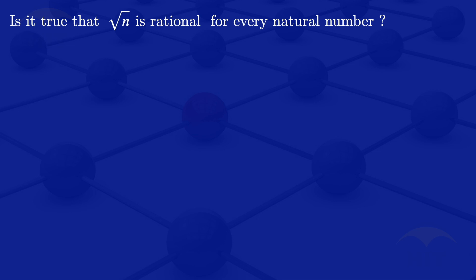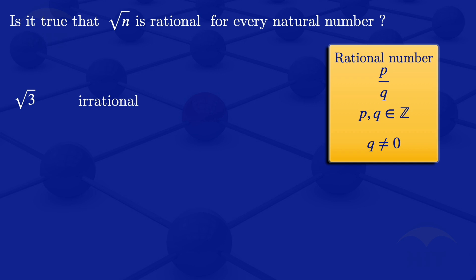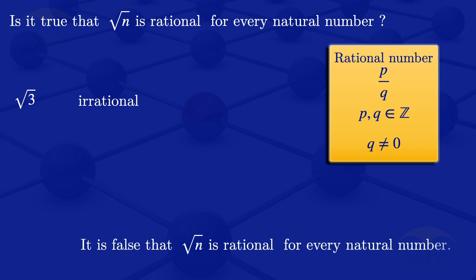To check, I will start by looking at the definition of rational numbers. A rational number is any number that can be written in the form p over q, where p and q are integers, and q is not equal to zero. Now, if we look at the square root of 3, it cannot be expressed in this form, so it is irrational. So, I will write that it is false that the square root of n is rational for every natural number.